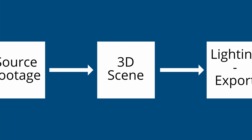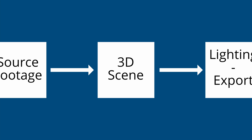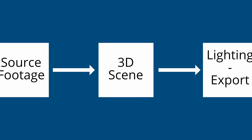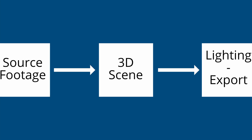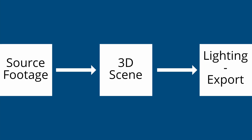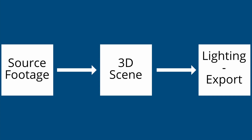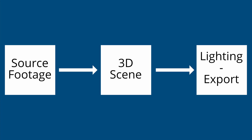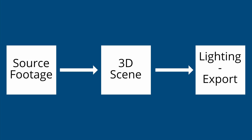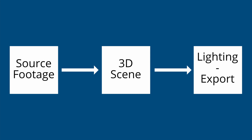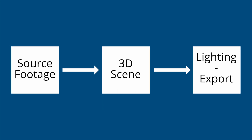But just like any other problem we have to solve in our lifetime, it is much easier if we break it down into smaller pieces. I personally divided the project into three discrete sections. The first section is where we do all the individual processing of the files. The second section is where we build the 3D scene, and the third section is lighting, animation, and exporting of the final video.